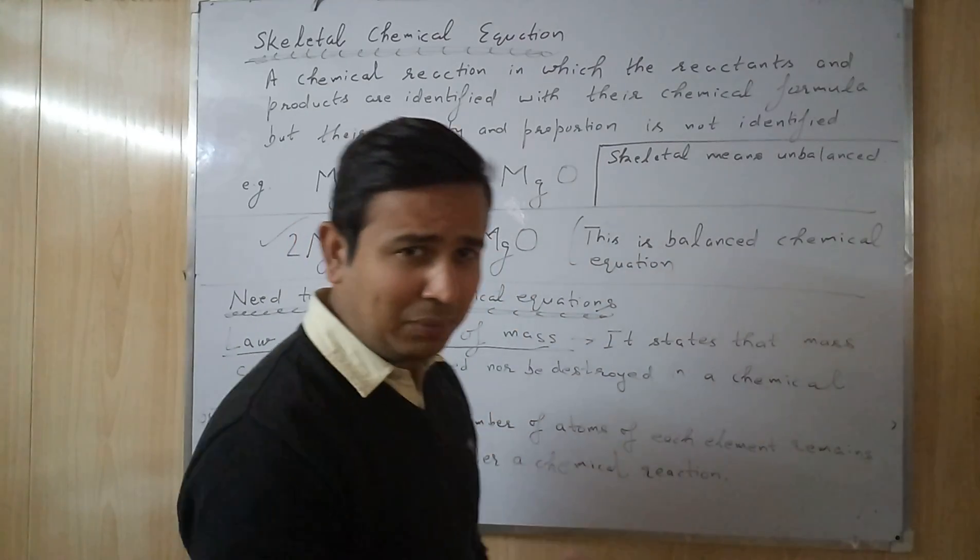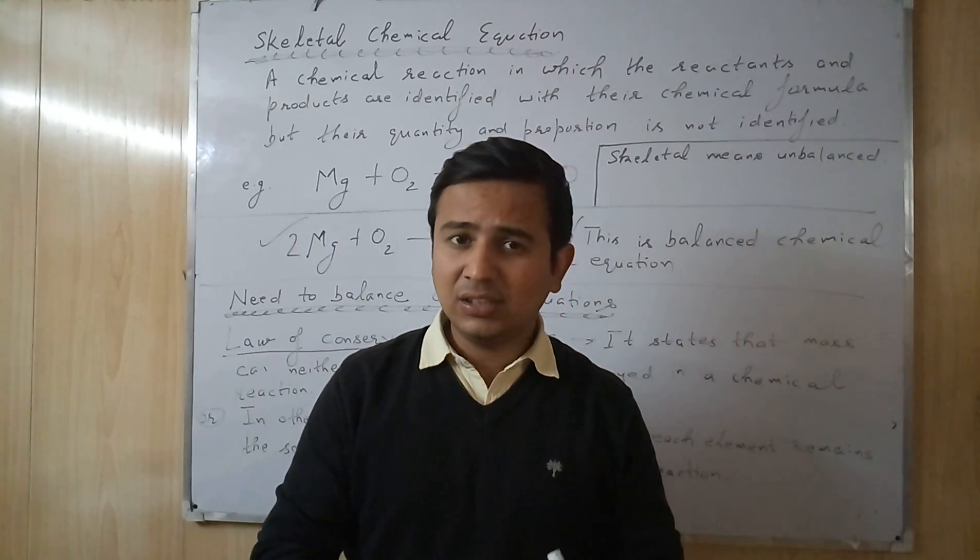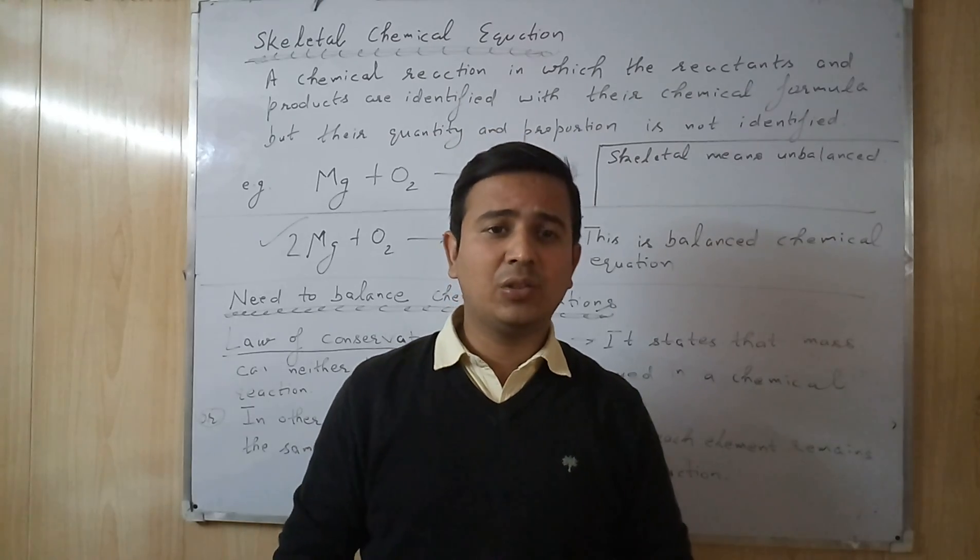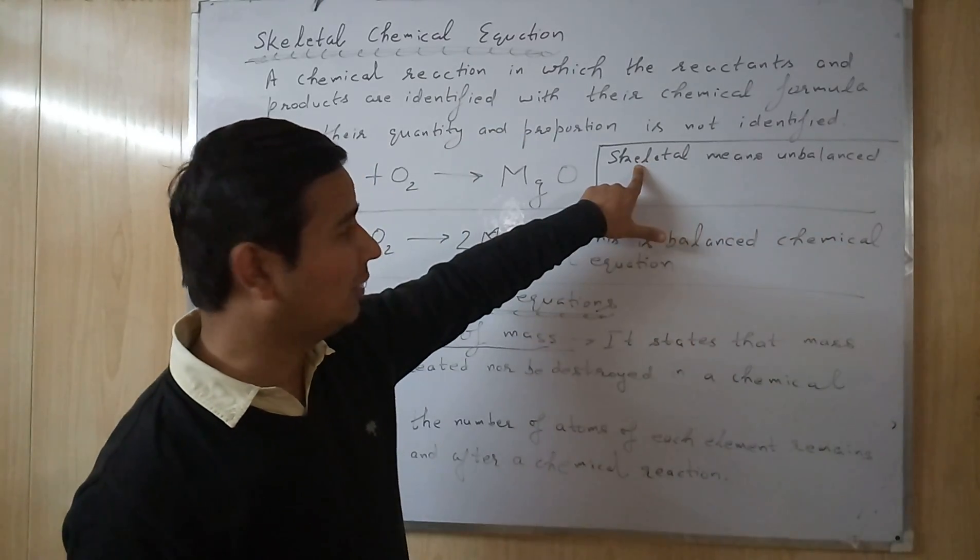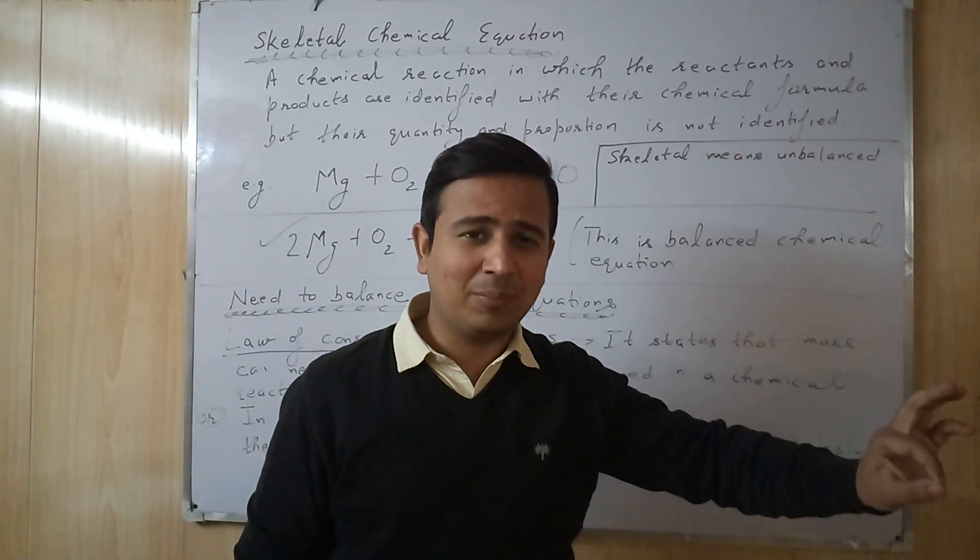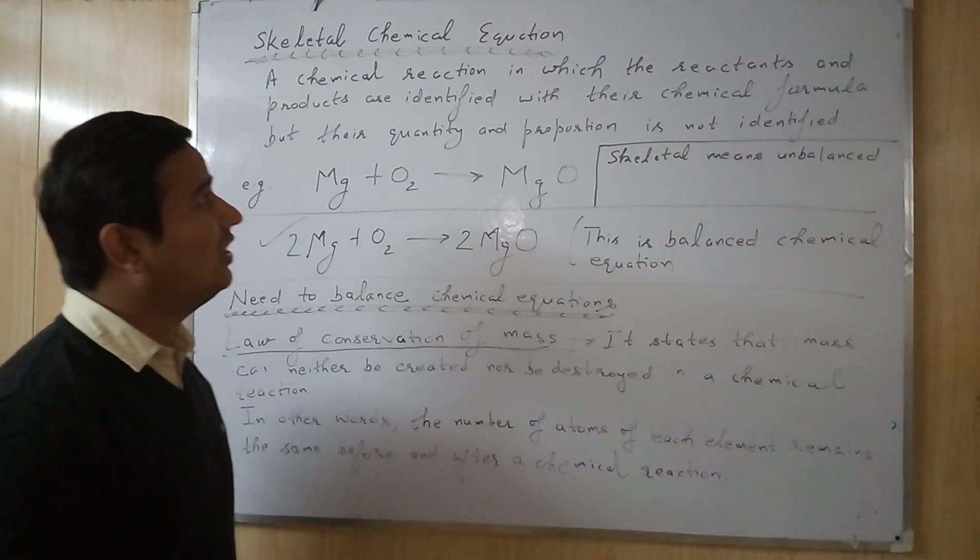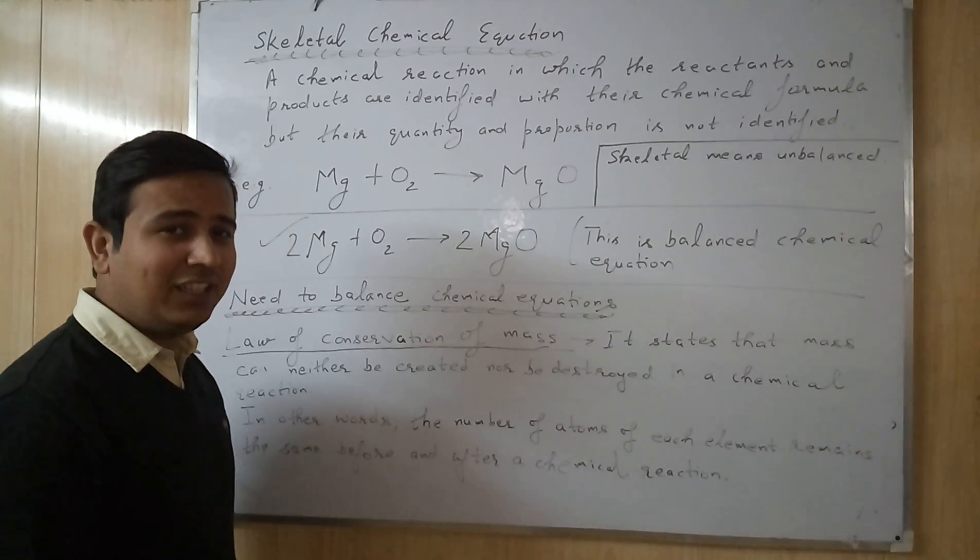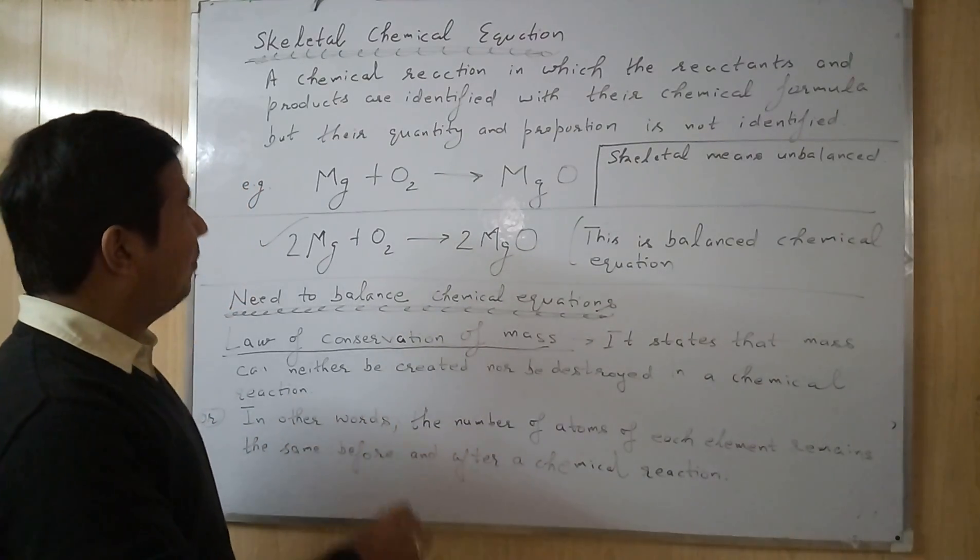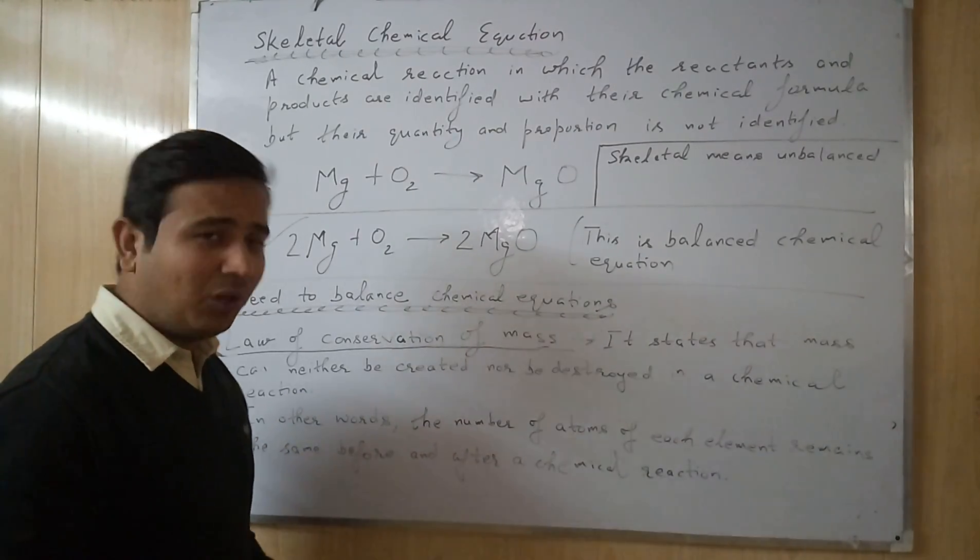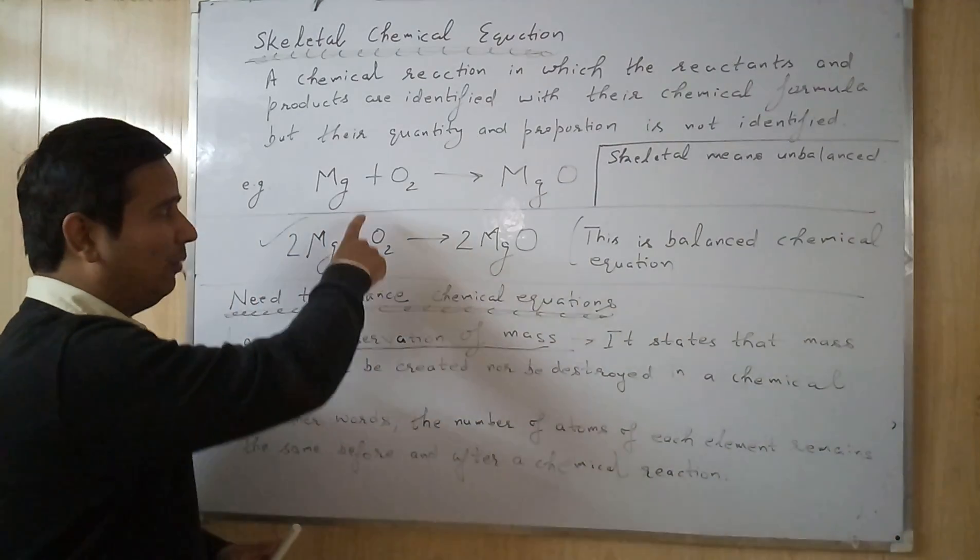As in my previous lecture I told you what is Unbalanced Chemical Reaction or Unbalanced Chemical Equation. So the same case. Here I have written something - Skeletal means unbalanced. But let's talk about the definition: a chemical reaction in which the reactants and products are identified with their chemical formula but their quantity and proportion is not identified.